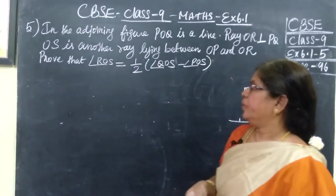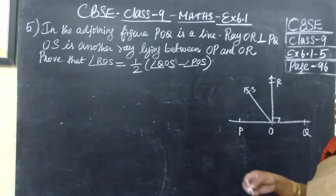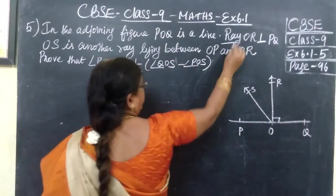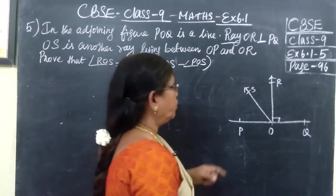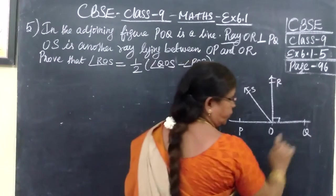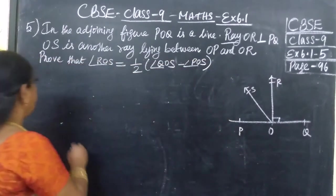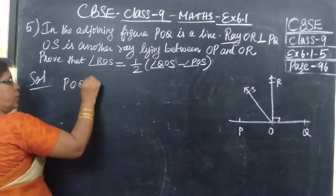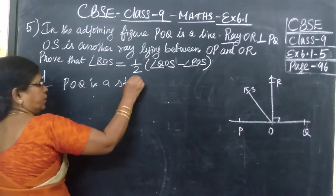In the last class we have seen up to 4 questions. You are given in the adjoining figure, POQ is a straight line. Ray OR is perpendicular to PQ. POQ is a straight line, so what is given? POQ is a straight line.